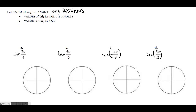Welcome to a video on how to find trig ratios given angles — specifically angles in radian measure. We're going to do some special triangle angles as well as quadrantal angles, which are values that fall on the x or y axis. For all of these questions, I'm going to begin by sketching the picture first, and then deciding what to do from the picture afterwards with the ratio.